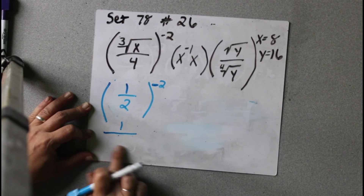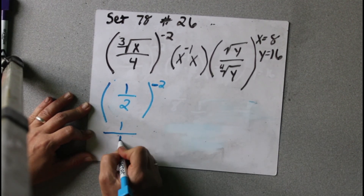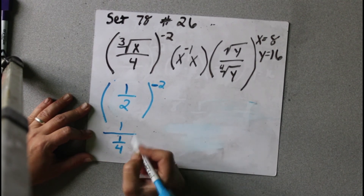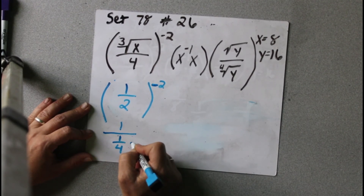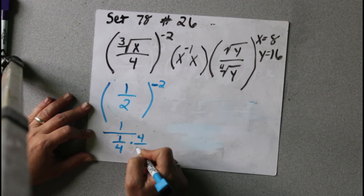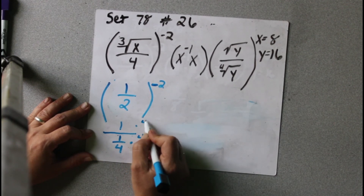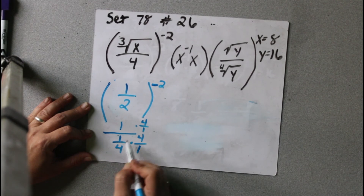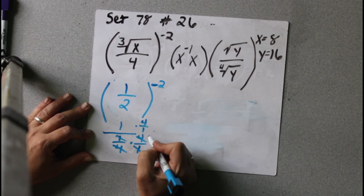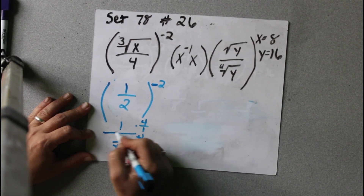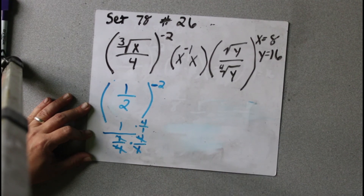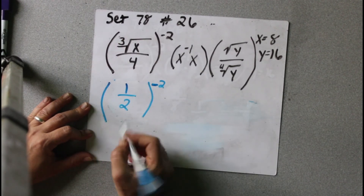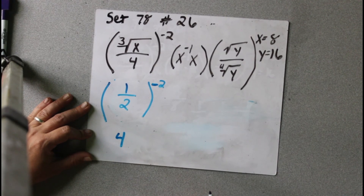So we can get rid of that and write 1 fourth. Now we have 1 over 1 fourth. To simplify that, we multiply the top and the bottom by 4 over 1. So we cancel and get 4 over 1, which is just 4. So this whole first part simplifies to 4.